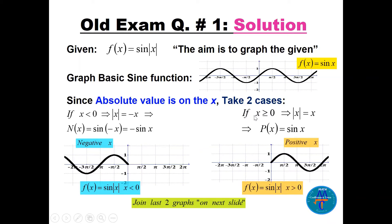Be careful: if x is positive, the absolute value of x equals x — we know that from algebra. Let's call it p(x) for positive and n(x) for negative. So function f is sine of |x|. For p(x), which is sine of x for positive x only, the graph is the same as the basic sine in that region.